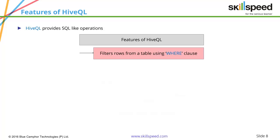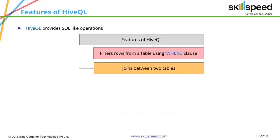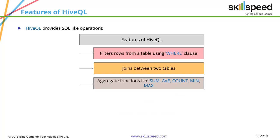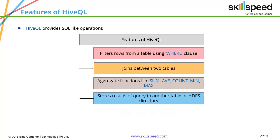You can also do joins. For example, if I have a customer table and a transaction table, and both have the customer ID as a common column, I can easily perform all types of joins such as EQ join, left outer, right outer, and full outer. Hive also provides aggregate functions such as sum, average, count, minimum, and maximum. You can store the result either directly in an HDFS directory or into another table.